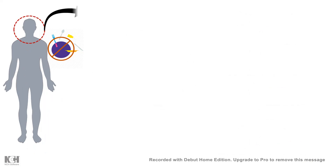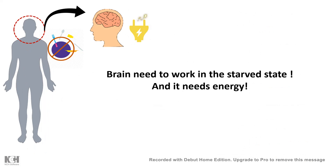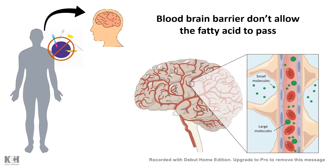Under the starved state, our brain cannot stop working — it needs energy even in the starved state. Without energy the whole body would collapse. Even if the body tries to oxidize fatty acids to generate acetyl-CoA, the big problem is that the body cannot utilize circulating fatty acids for the brain, because the blood-brain barrier does not allow the brain to uptake fatty acids.